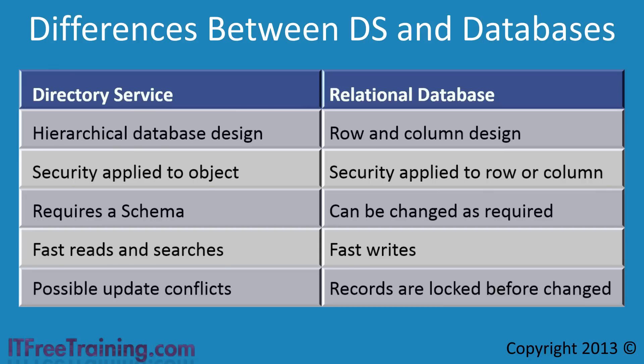First, directory services are hierarchical in design, like files and folders on your hard disk — you can place objects in folders. A database in comparison is organized based on rows and columns, like those found in Excel. Because the database is organized differently, this affects how security is applied. Security is applied in a directory service based on the object, whereas in a database security is applied to the row or column.